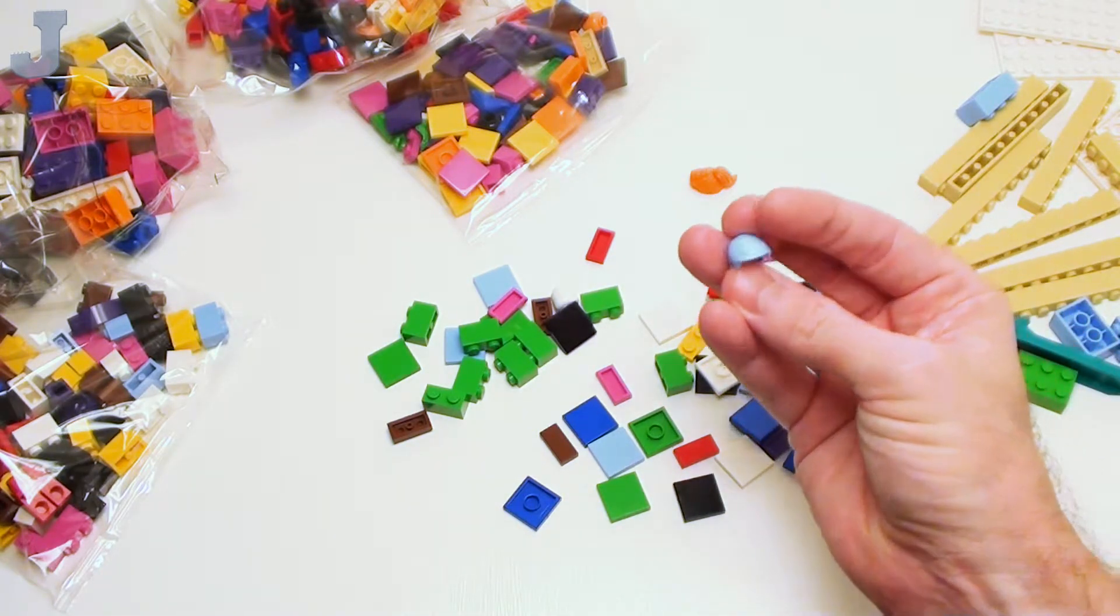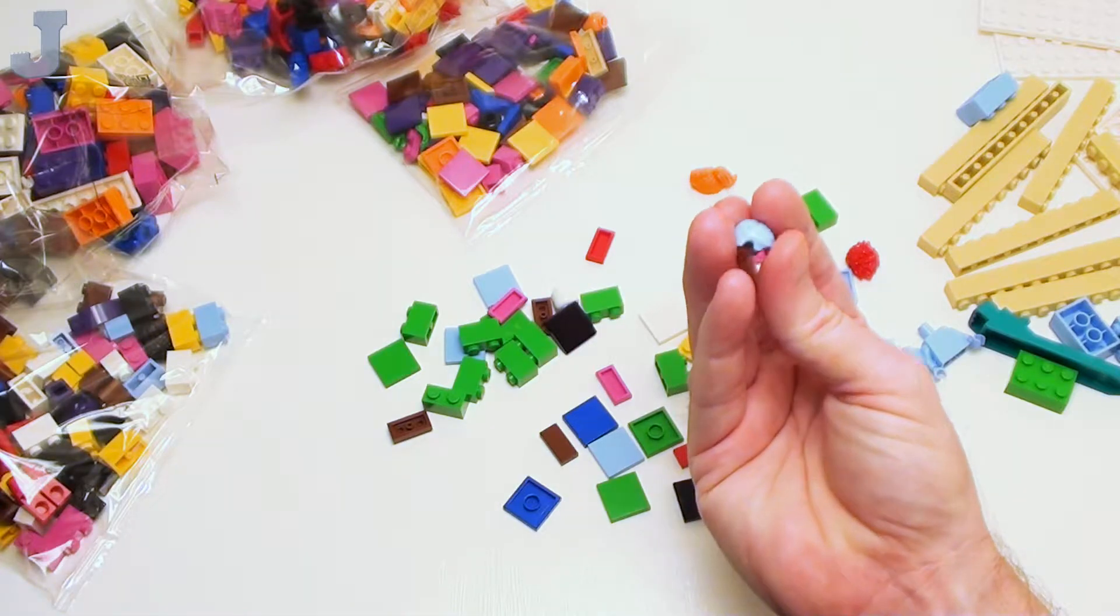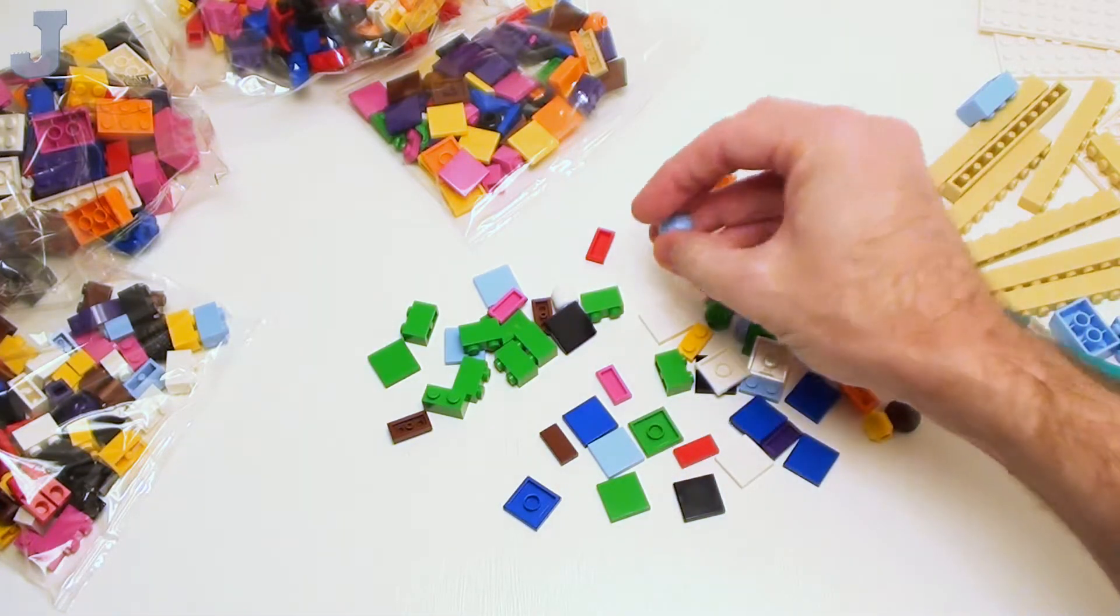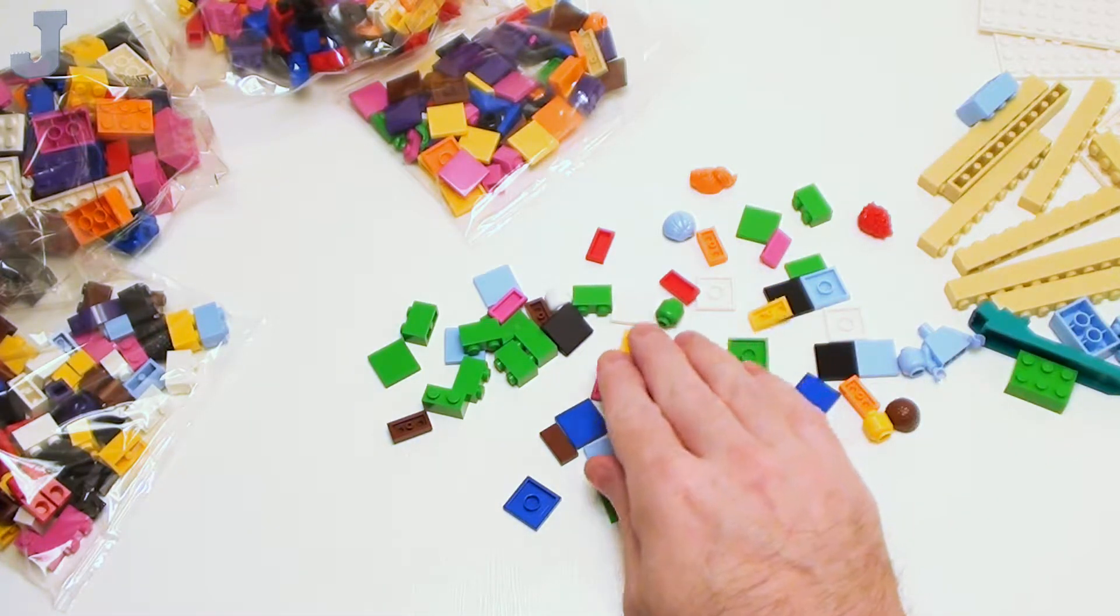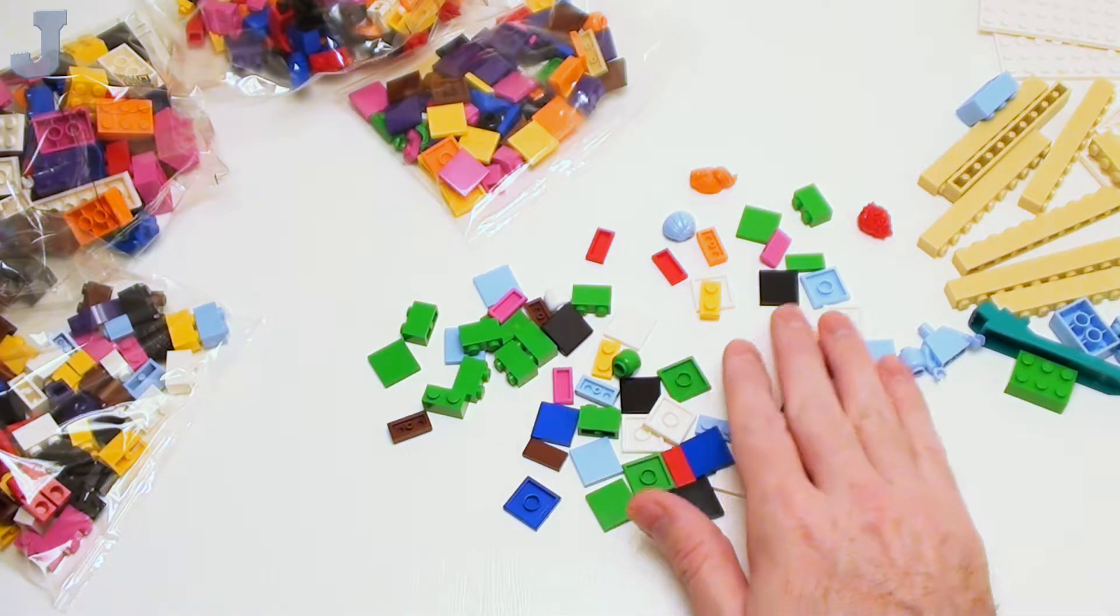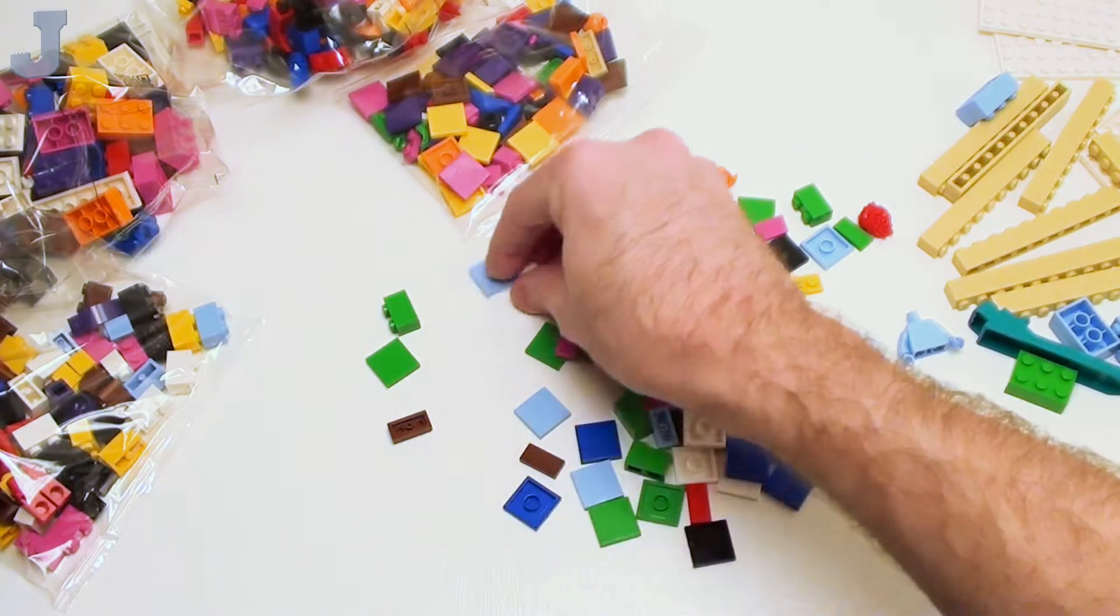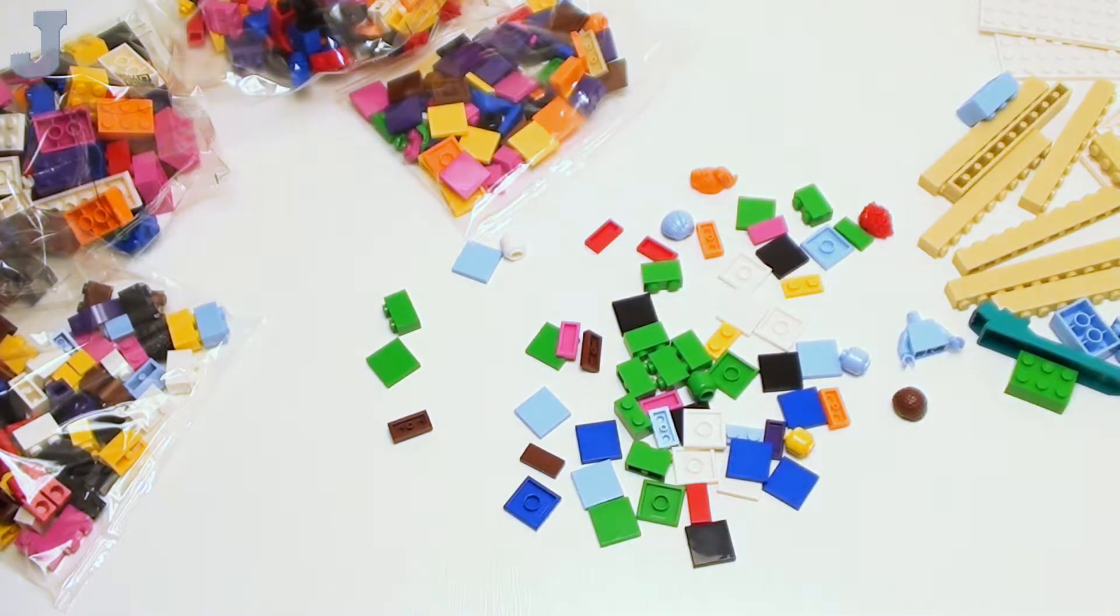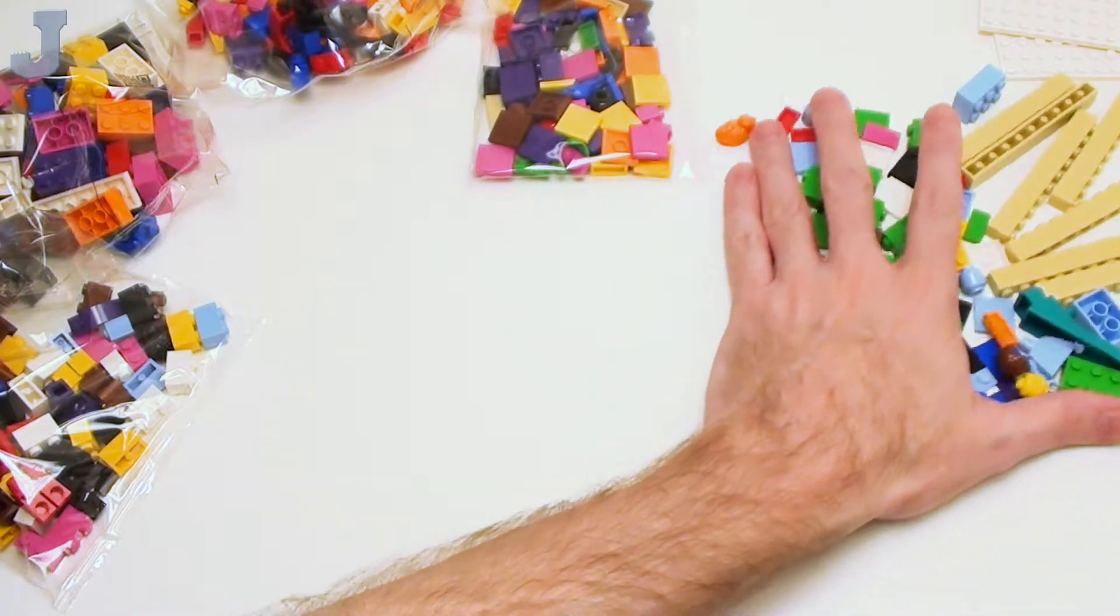What else have we got in there? Oh, we got a light blue side parted hair. Bright green minifigure head. Yeah, there's a plain boring white one. We don't care about that because I got plenty of them.